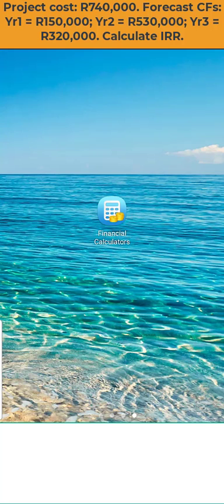This is a demonstration of how to use a smartphone app to calculate the internal rate of return of a proposed project. The example is based on an imaginary project with a cost of R740,000 and with forecast cash flows over a three-year period of R150,000 in the first year and R530,000 in the second year and R320,000 in the third year.